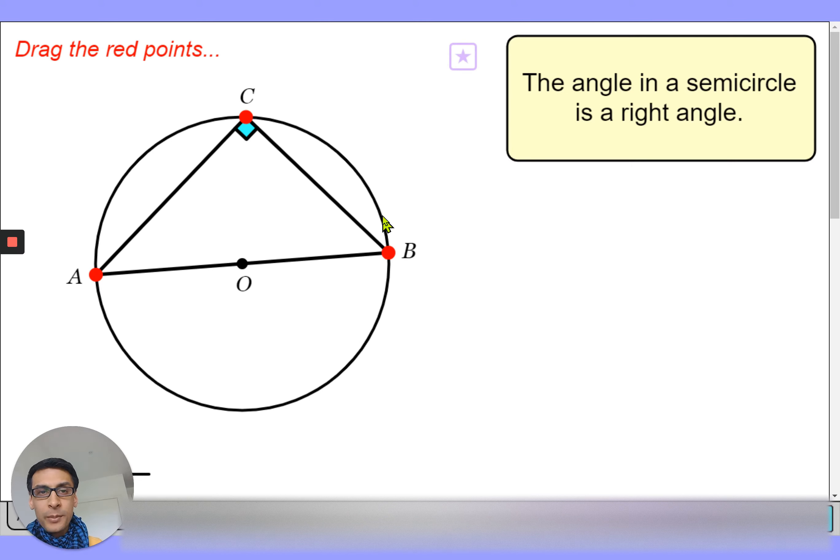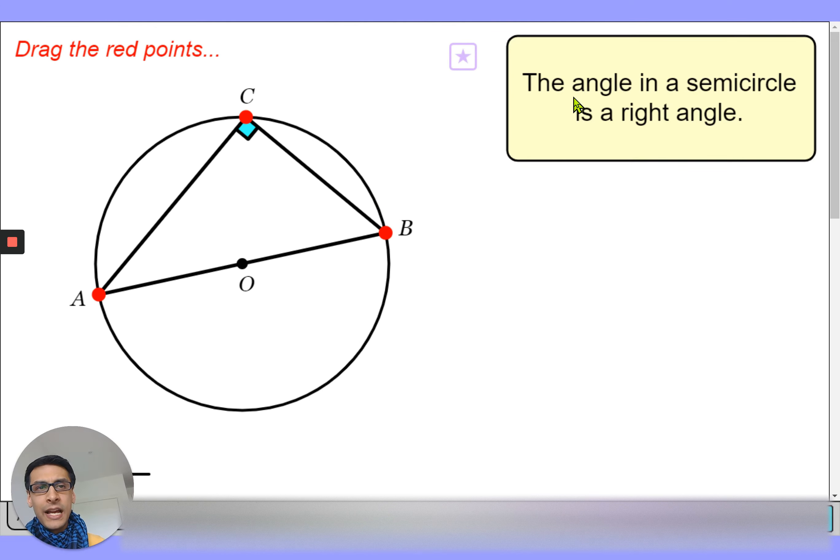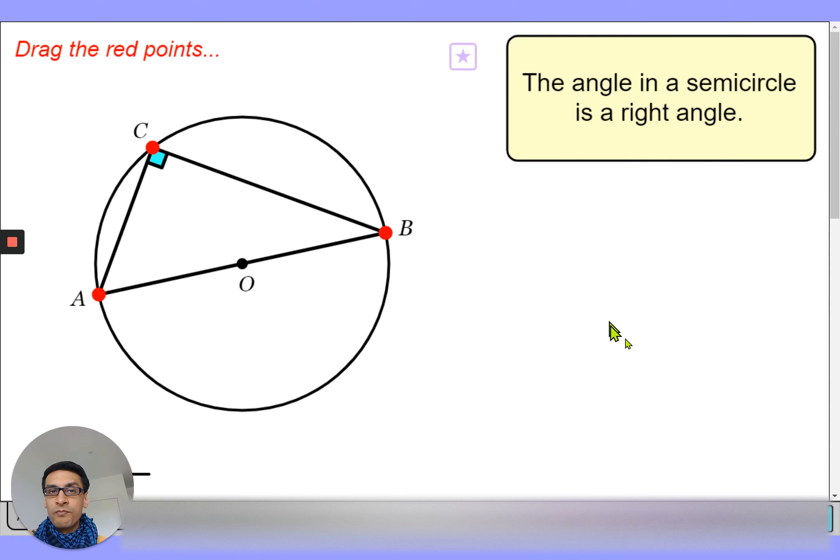It sounds a bit vague to say the angle in a semicircle because it's actually a triangle inside a semicircle where one side is the diameter and the other side is a vertex on the circumference. Luckily you don't have to say that in the exam; if you spot something like this in a question, you just have to say the angle in a semicircle is a right angle and that's good enough.